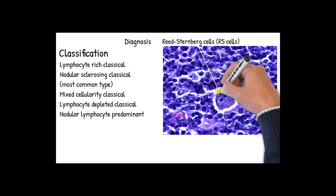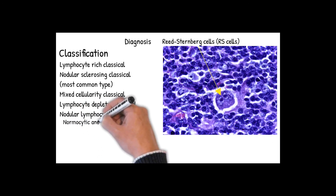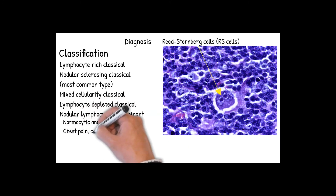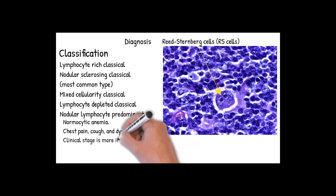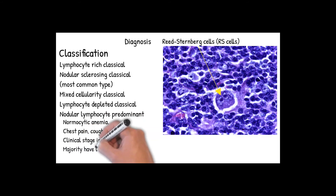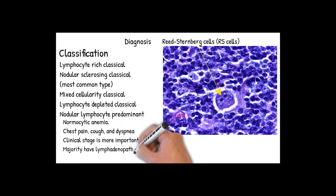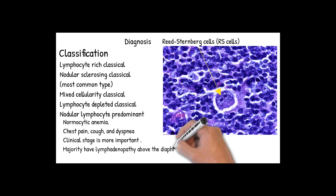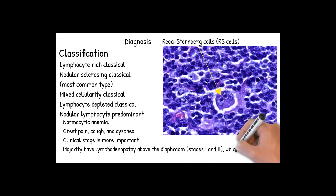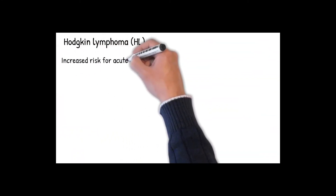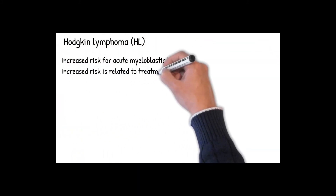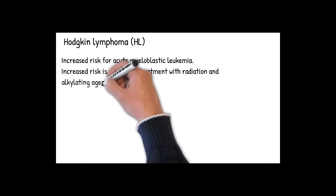Hematologic findings include normocytic anemia, which is a presenting symptom in 40% of cases. Chest pain, cough, and dyspnea usually indicate the presence of a large mediastinal mass or metastasis to the lungs. Clinical stage is more important than the type of HL in determining prognosis. The majority have lymphadenopathy above the diaphragm at stages 1 and 2, which correlates with an excellent prognosis. There is also increased risk for developing second malignancies, usually acute myeloblastic leukemia, related to treatment with radiation and alkylating agents.